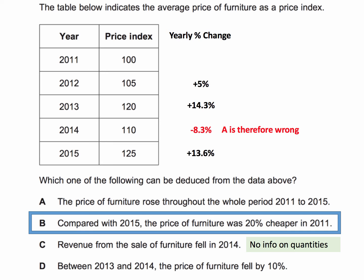It could have been that demand for furniture was price elastic, in which case a fall in the price of furniture would actually cause revenue to go up. Option D: between 2013 and 2014 the price of furniture fell by 10%. Well, we've done the calculation — it fell by 8.3%. The index fell by 10, but it's the change (10) divided by the original (120), so that's not the right answer.